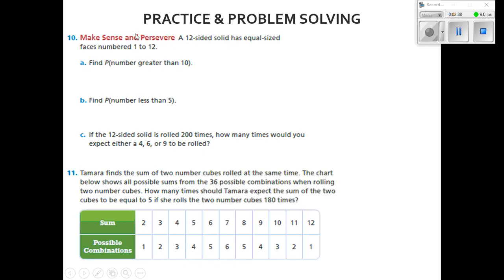Next we're going to do number 10. It says make sense and persevere. A 12-sided solid has equal-sized faces numbered 1 through 12. I guess what they mean is like a dice—a 12-sided dice has equal-sized faces numbered 1 through 12.